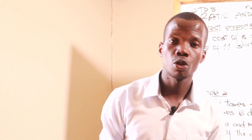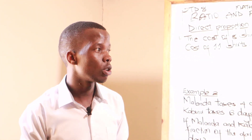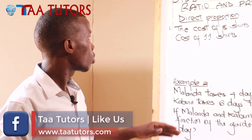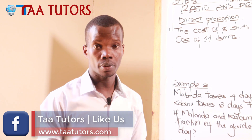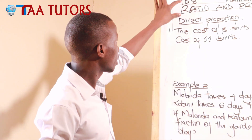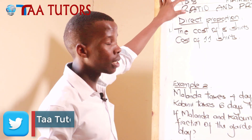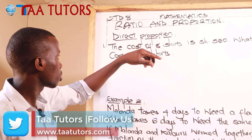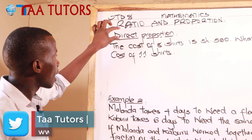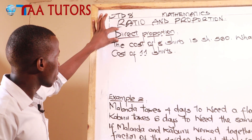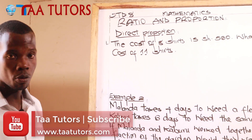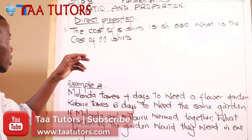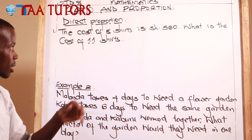In our previous lesson we talked about ratio increase and ratio decrease. Today we want to talk about direct proportion. Under ratio and proportion we are going to talk about direct proportion. Let's look at our first example: the cost of eight shots.